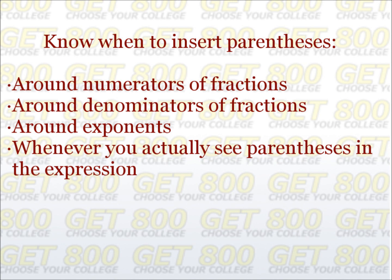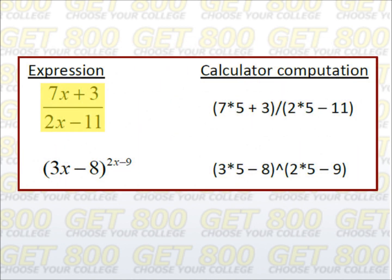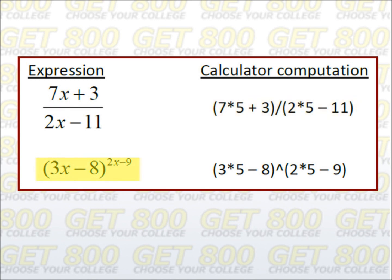For example, let's look at the expression (7x + 3) / (2x - 11), and let's substitute a 5 in for x and see how it should look on your calculator. The calculator computation should look like this. One more example: 3x minus 8, all raised to the (2x - 9). In your calculator, that should look like this.